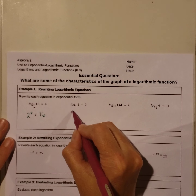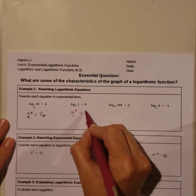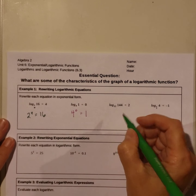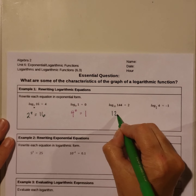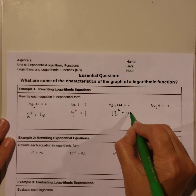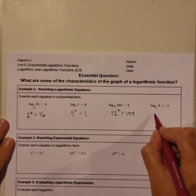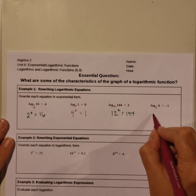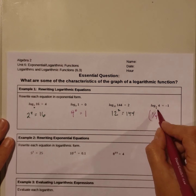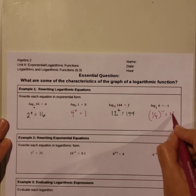Our base, raised to the number over here: base 12, this is our exponent, equals 144. And our base, 1 fourth, raised to the negative 1, is equal to 4.